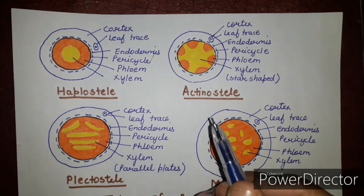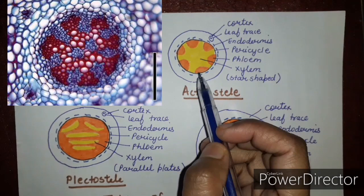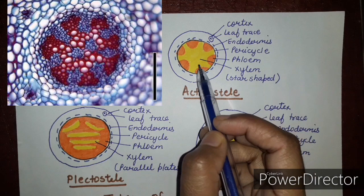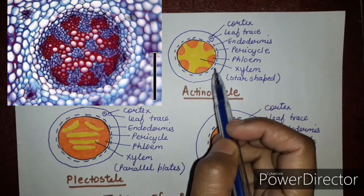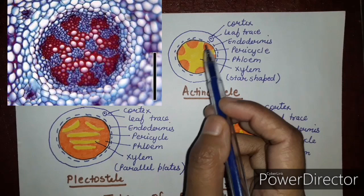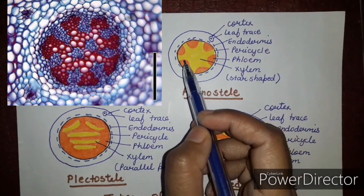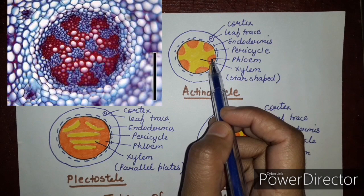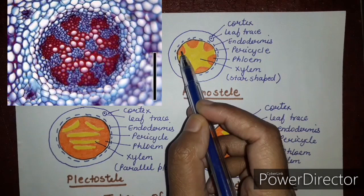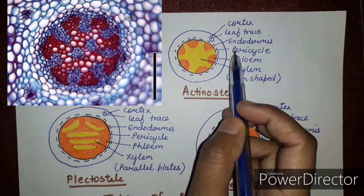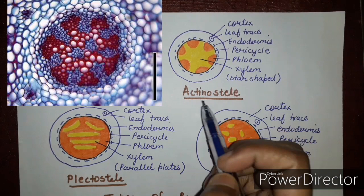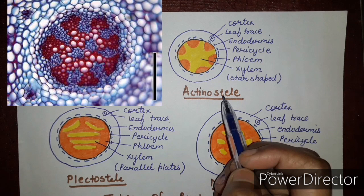In actinostele, xylem shows a star-shaped structure and phloem is present in small patches around the xylem. The other layers — pericycle, endodermis, cortex, and leaf trace — are arranged in the same sequence as other protosteles. Pith is absent since this is a protostele. Actinostele is seen in Lycopodium serratum; cutting sections of this plant shows a very clear slide under the microscope.